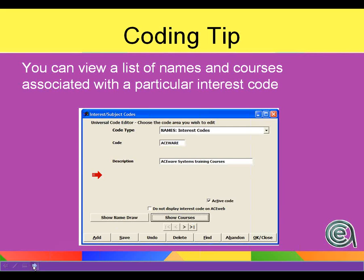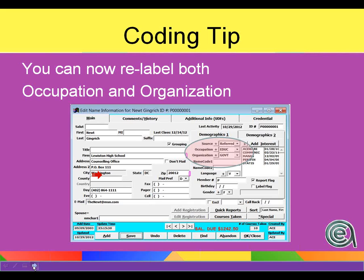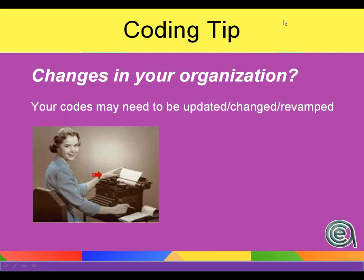We talked about the view area — show names, show courses — as a quick way to see what's associated. The reminder about relabeling occupation and organization. Think of coding like life insurance — re-evaluate based on changes in your organization. If your organization has shifted from community ed to business and professional, go in and deactivate the cooking or bonsai plant codes, then activate codes that have to do with marketing, supervision and leadership, lean management, Cisco, IT tech. Update the codes to match up with the mission of what your organization is doing.